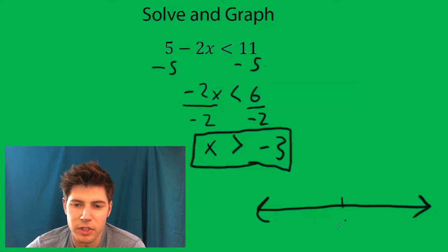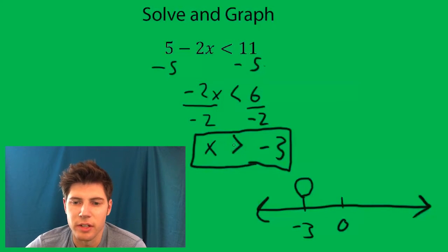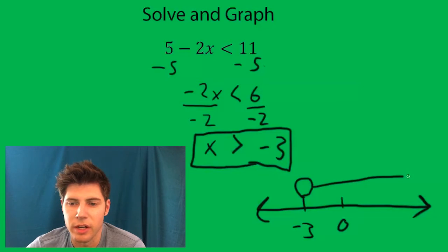We can mark 0 if we want, and negative 3. Negative 3 is what we're really interested in. And this says x is greater than negative 3, so we're going to graph greater than negative 3.